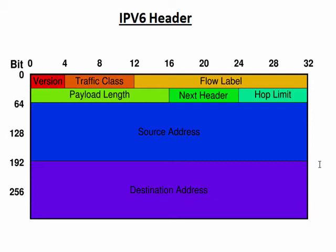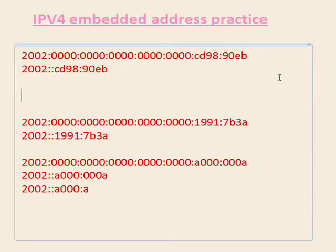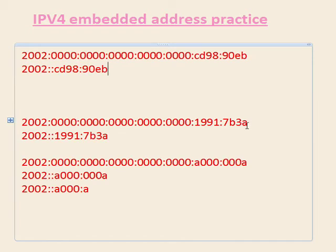Before ending the video, let's practice with IPv4-embedded addresses. Here we have the full address at the top, and the one below it is the same address in a different notation. These 2002:: notations have the last bits as an IPv4 address. We'll use the calculator to practice converting, to get comfortable working with IPv6.